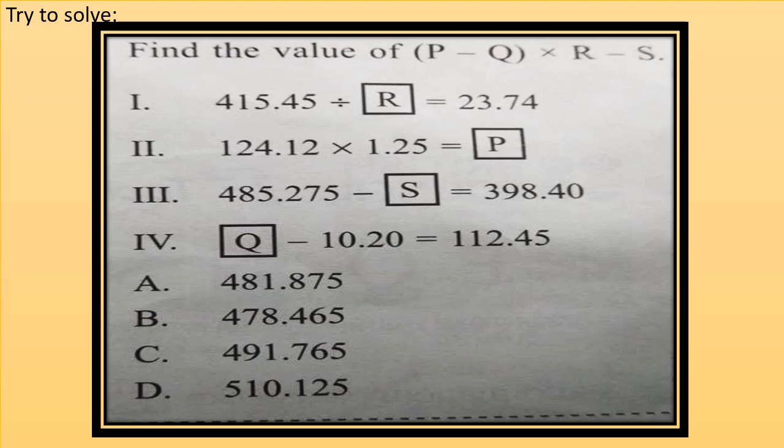Third is 485.275 minus S equals to 398.40. From third we will get the value of S. Fourth is Q minus 10.20 equals to 112.45. From fourth we will get the value of Q. Now after we will get the value of P, Q, R, S by solving the equation.